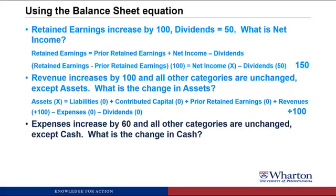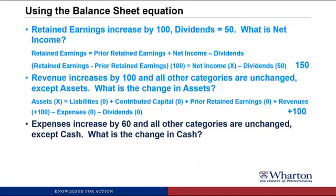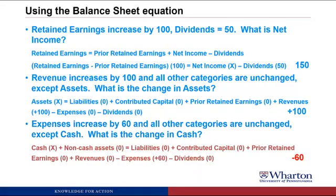Finally: expenses increased by 60 and all other categories are unchanged except cash — what's the change in cash? Using the complete balance sheet equation with assets split into cash and non-cash: expenses going up by 60 means the right-hand side goes down by 60, which means cash also has to go down by 60 for the equation to stay in balance.